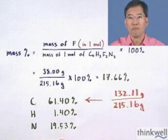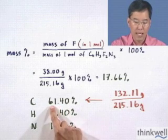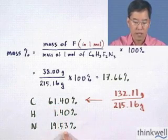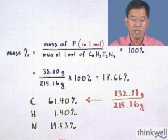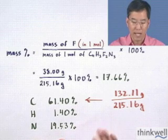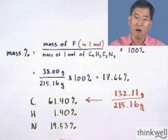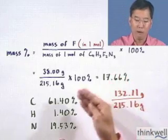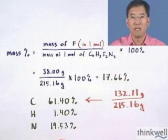Now think about it. The constituents of this molecule are carbon, nitrogen, hydrogen, and fluorine. Since that's all there is, the sum of all of the mass percents has to be 100 percent. If you add 17.66 plus 61.40 plus 1.40 plus 19.53, you get 99.99 percent, which is essentially 100 percent. There's some little rounding error. You can always double check your calculations because the sum of all the mass percents has to equal 100 percent.